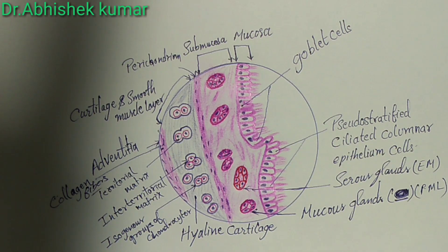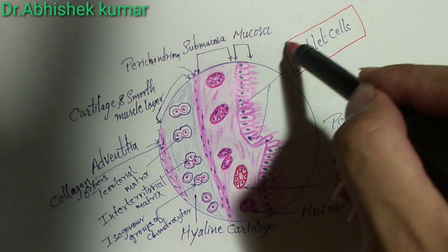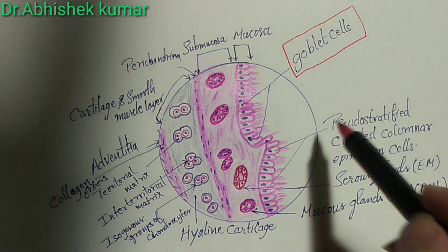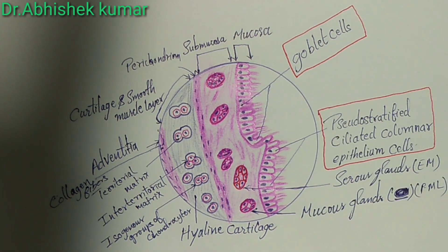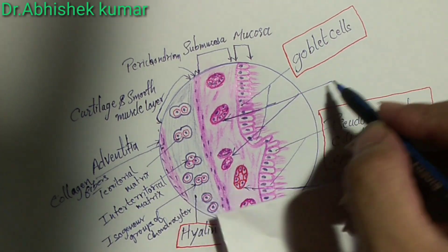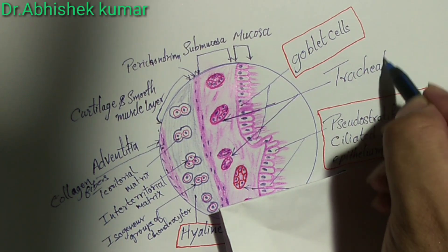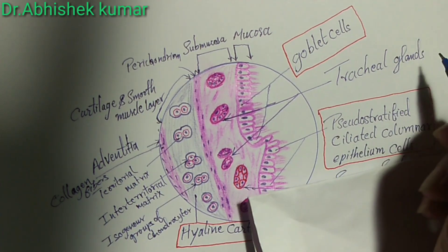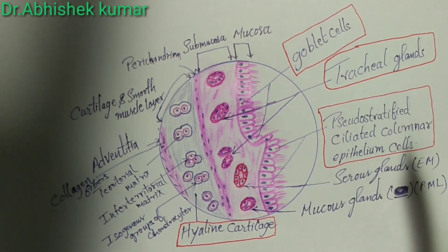We have completed almost all the things. Histologically we can identify the trachea by goblet cells, pseudo-stratified ciliated columnar epithelium, hyaline cartilage, and the presence of tracheal glands in the submucosal layer.